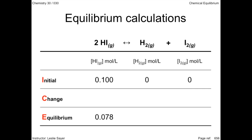The first thing we can do is determine the difference in concentration of the hydrogen iodide gas from the beginning of the reaction to the point when the reaction reaches equilibrium. The change is negative 0.022 moles per liter. This means that from an initial concentration of 0.1 moles per liter of reactant, 0.022 moles per liter actually reacted. The concentration decreased, hence the minus sign.